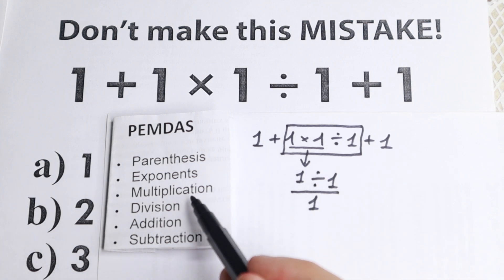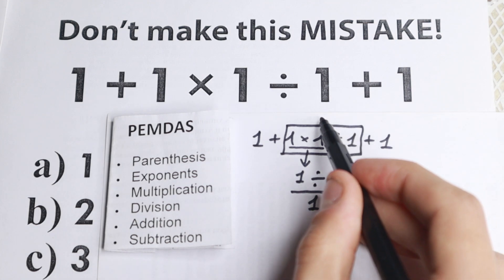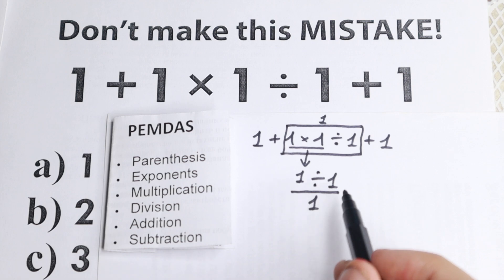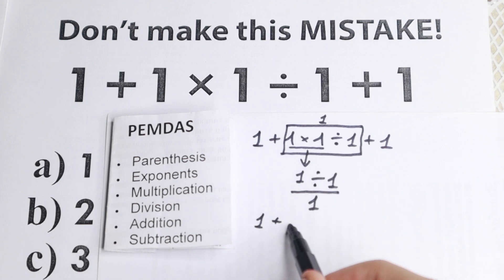So the first step, multiplication and division part, is equal to 1. So this equal to 1. Then what we still have, we still have 1 from the beginning. We have 1 in this part, plus 1, and plus 1 in the end. So 1 + 1 + 1 equal to 3. And 3 is the correct answer.